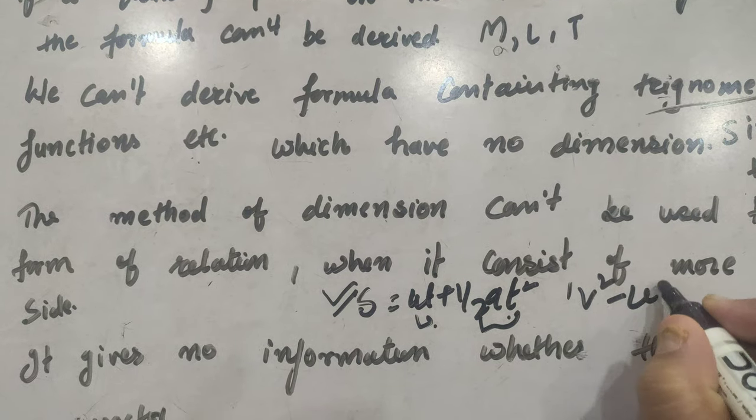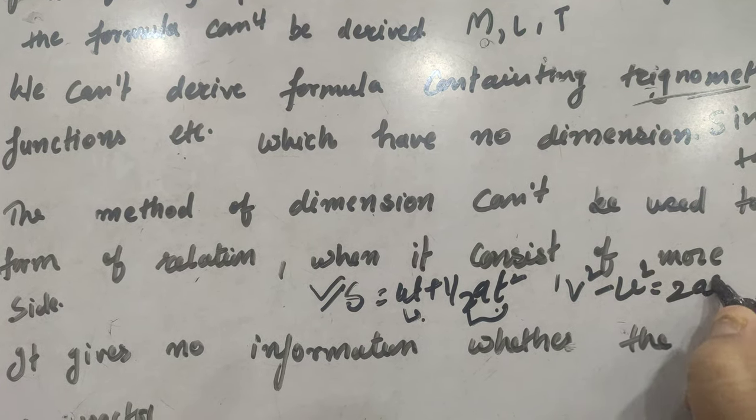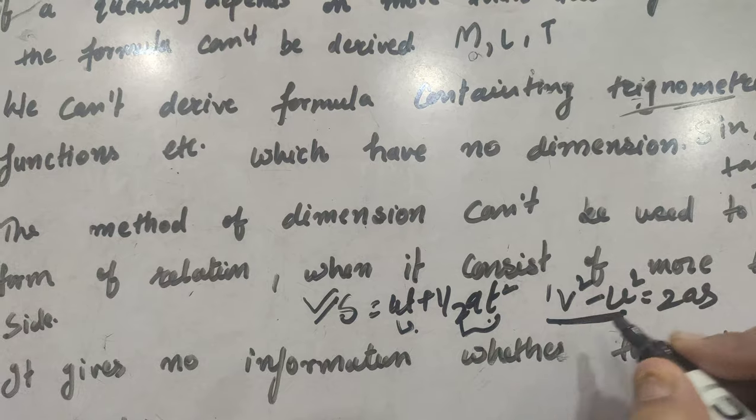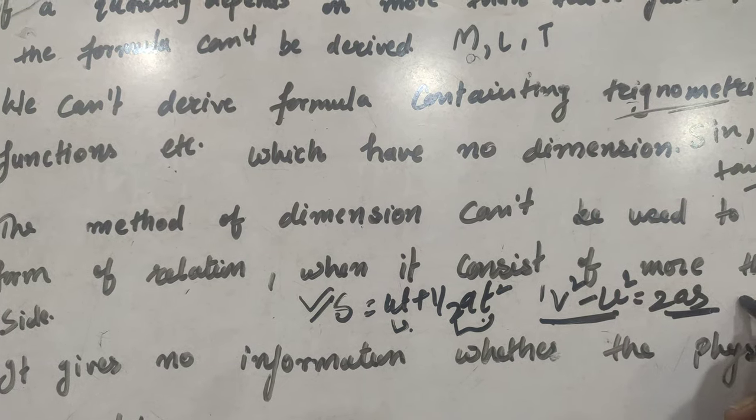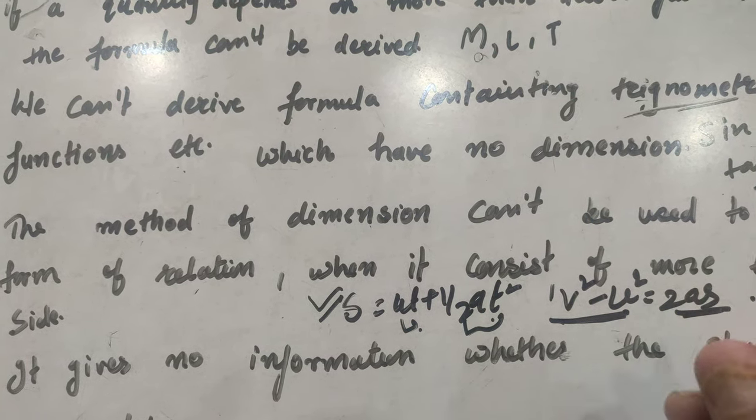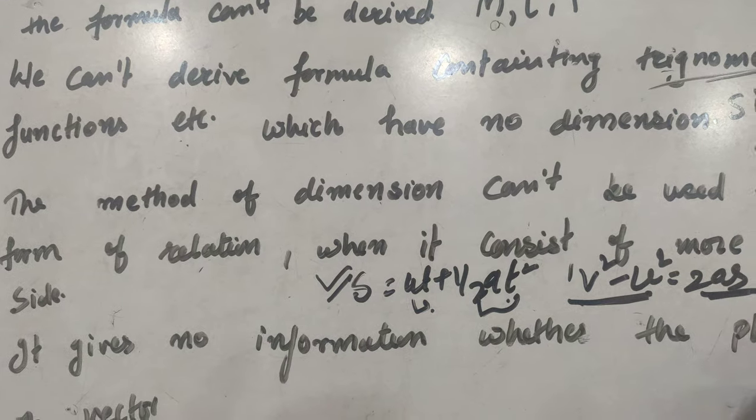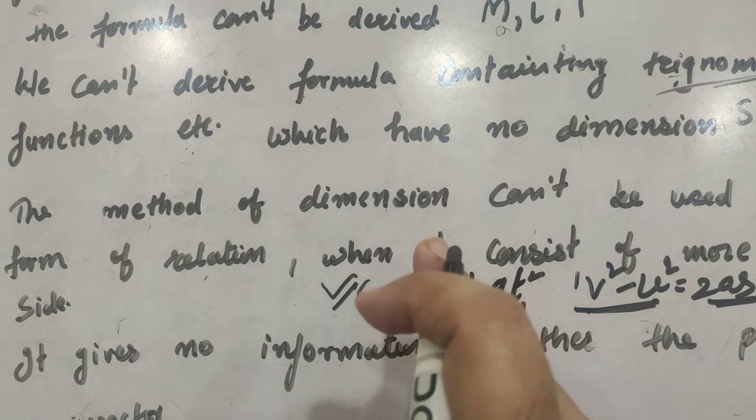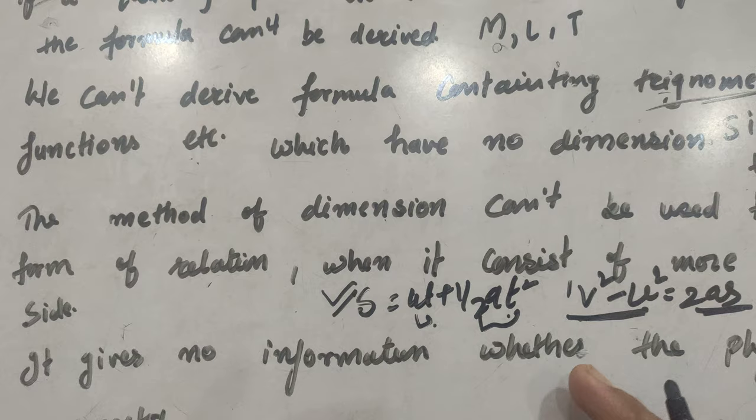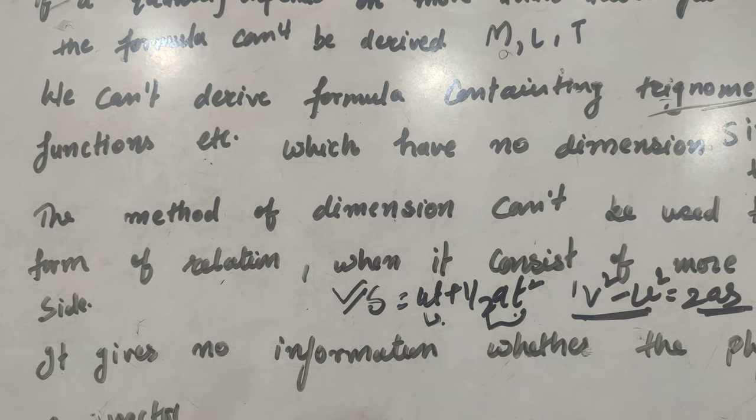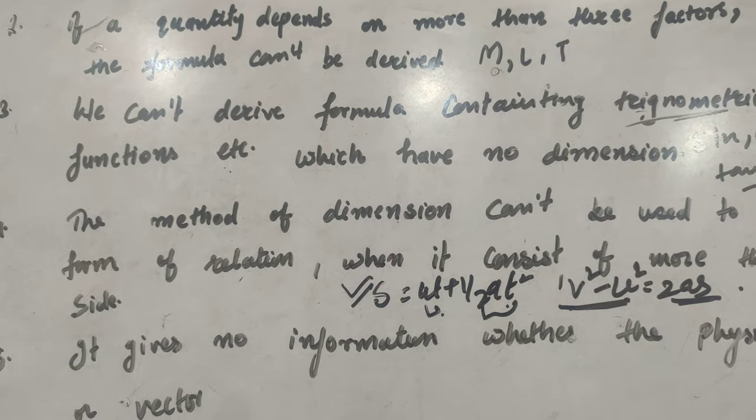if we are talking about v square minus u square equals 2as, again these are the unit of v square and this is also the unit of v square. So, it is not possible to find out v square minus u square to the left hand side or ut plus half at square to the right hand side. So, this is one of the important limitations of the dimension analysis also.